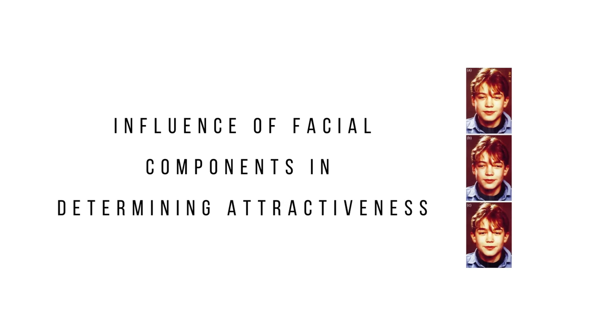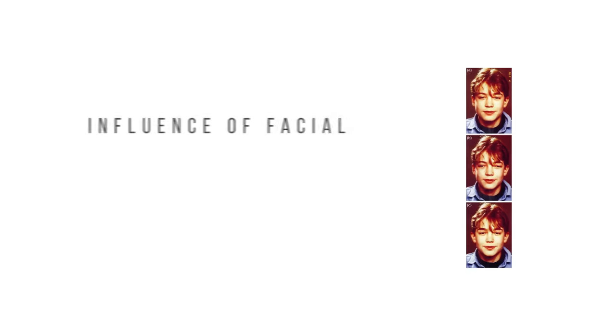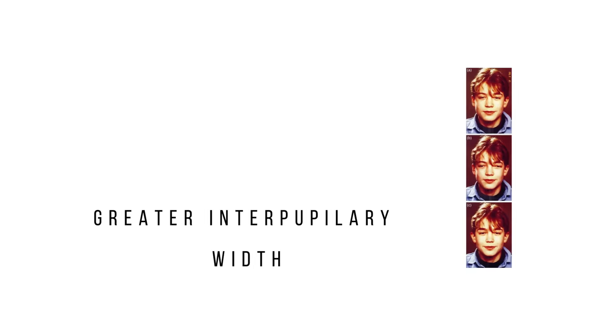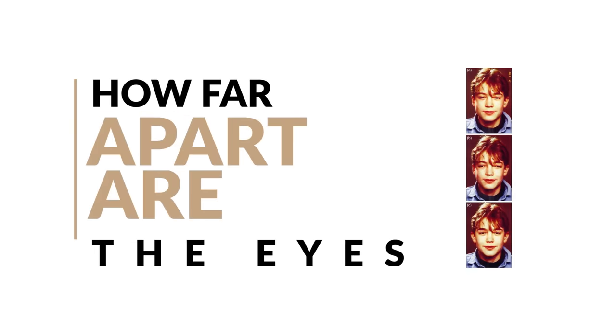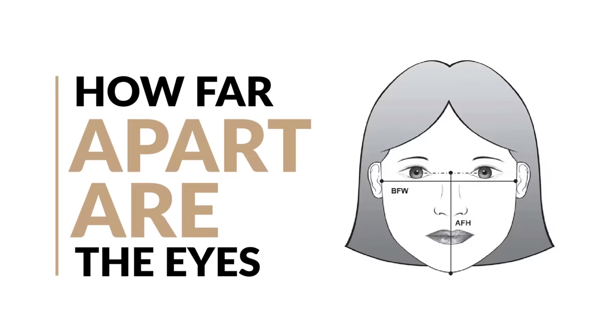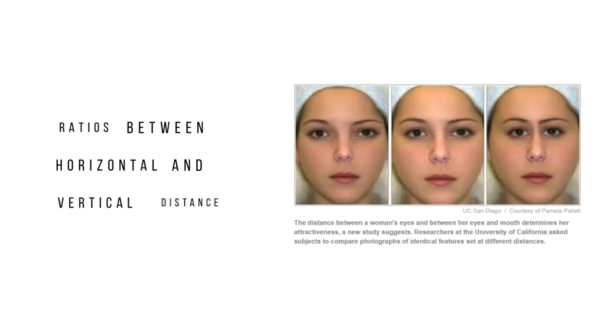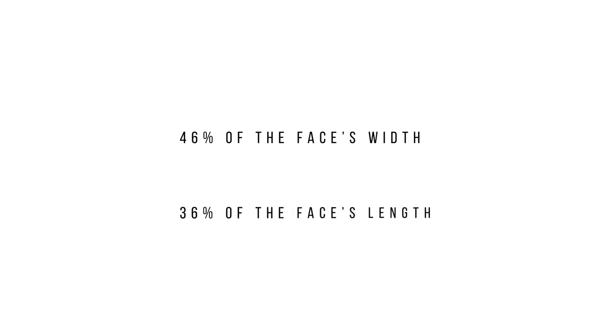In the last video, I opened with a scientific paper on the influence of facial components in determining attractiveness. From the comments, the majority of you chose A or C, as expected from the experiment's own results. B was determined less attractive because it had a greater interpupillary width between the two eyes. This led us to our first aspect of a good eye area: how far apart are the eyes? Ideally, human eyes should be one eye width apart. A 2008 experiment on interpupillary distance found that faces were judged most attractive when the distance between the eyes was 46% of the face's width and the vertical distance from the mouth was 36% of the face's length. Ultimately, this correlates with what we know as the golden ratio.